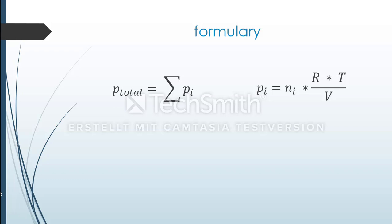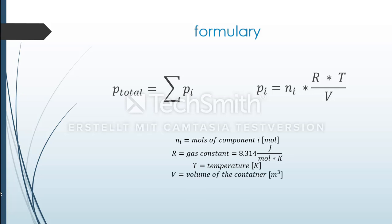The partial pressure of a gas is equal to the moles of that gas multiplied with R times T divided by the volume of the container. I will explain the use of this formula by an exercise.